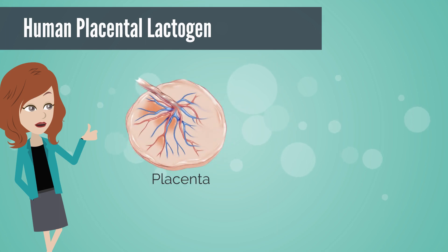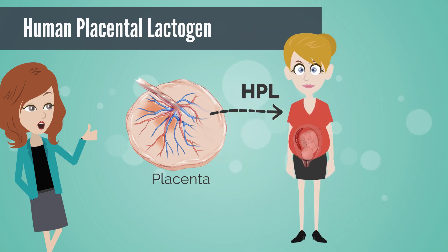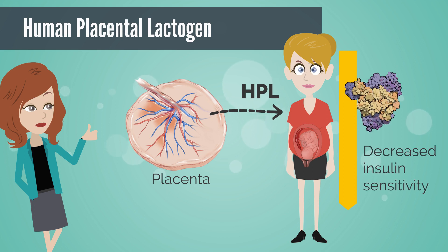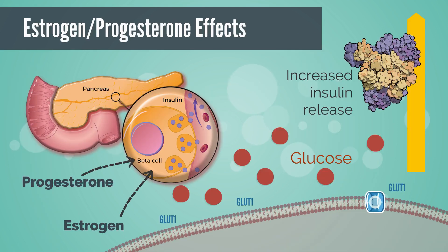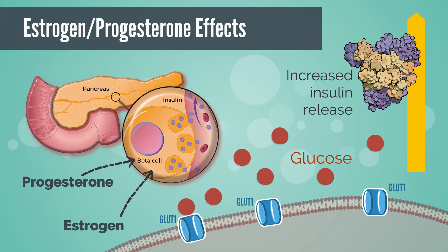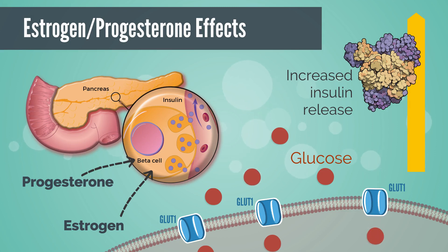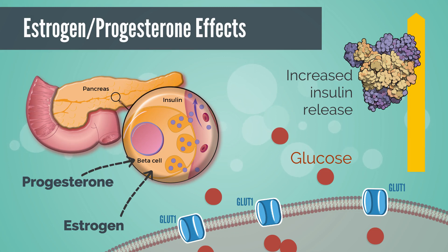Human placental lactogen, or HPL, is a single chain peptide that is synthesized by the trophoblast and secreted into the maternal circulation. HPL is produced to promote nutrition for the fetus and is a strong anti-insulin. In maternal circulation, it leads to a decrease in peripheral sensitivity to maternal insulin. Simultaneously, estrogen and progesterone are stimulating pancreatic beta cell hypertrophy, leading to increased insulin release. In order to utilize this increased circulating glucose, the placenta upregulates the expression of the GLUT1 transporter by 2-3 fold, allowing glucose to enter fetal circulation via facilitated diffusion.